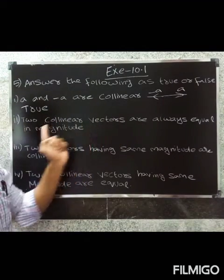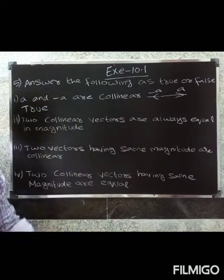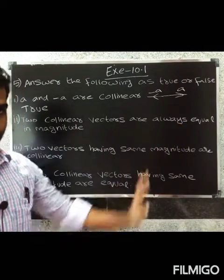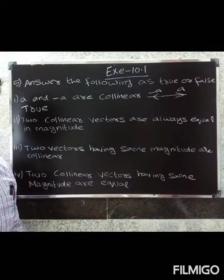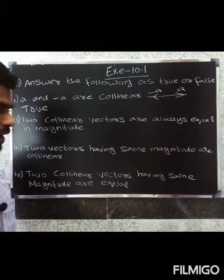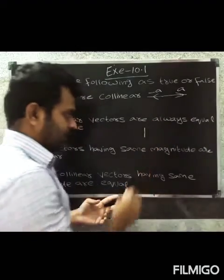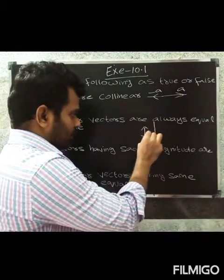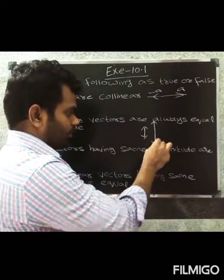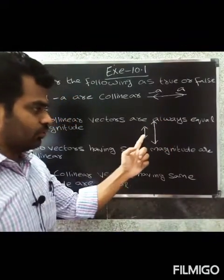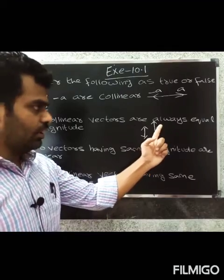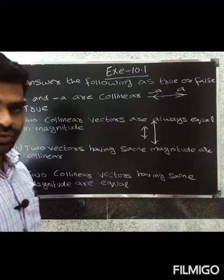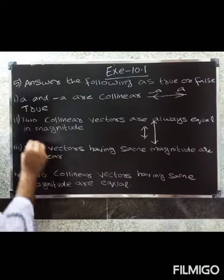Next: two collinear vectors are always equal in magnitude. Now, this vector has a certain magnitude and this one has a different magnitude. They are not always equal in magnitude — sometimes they can vary. So the answer is false.